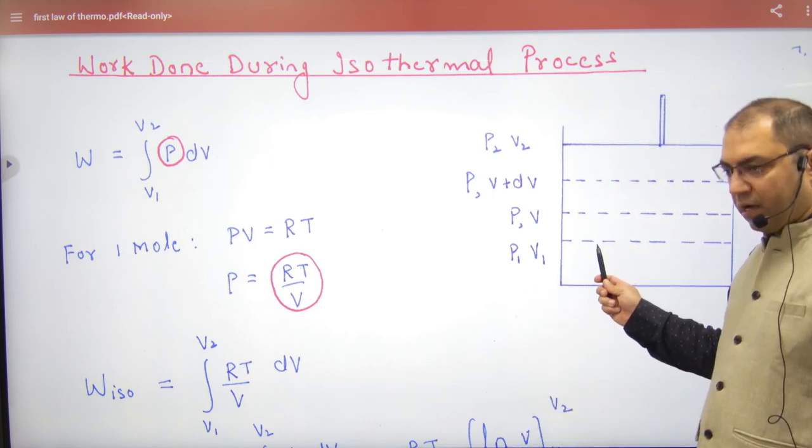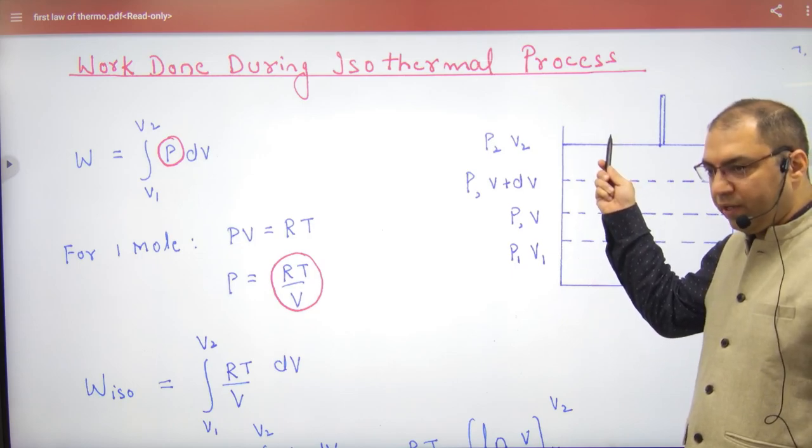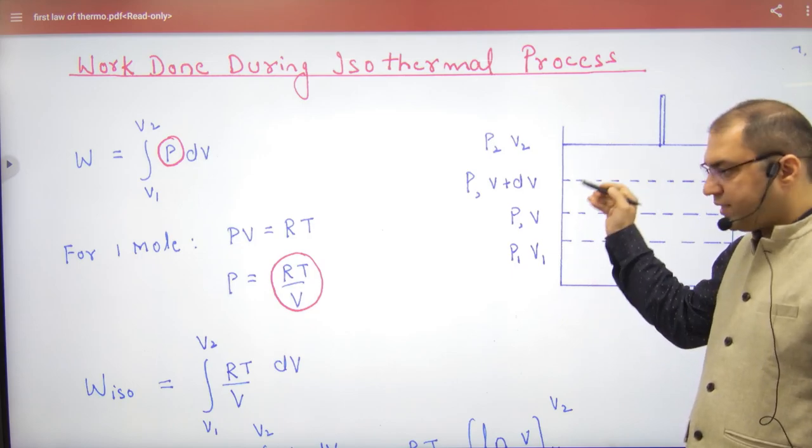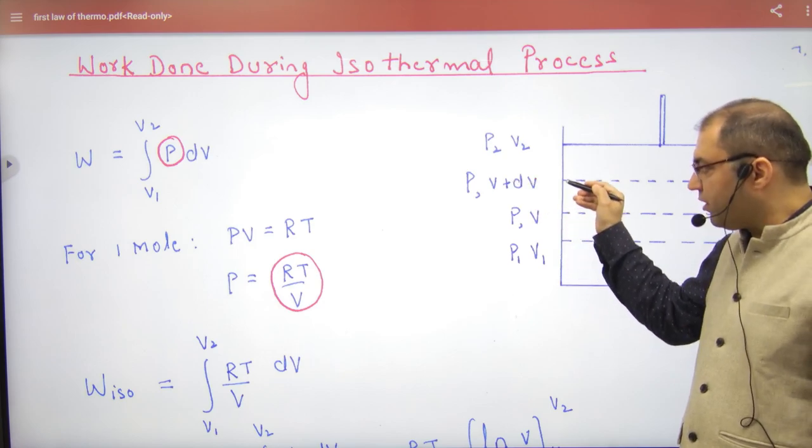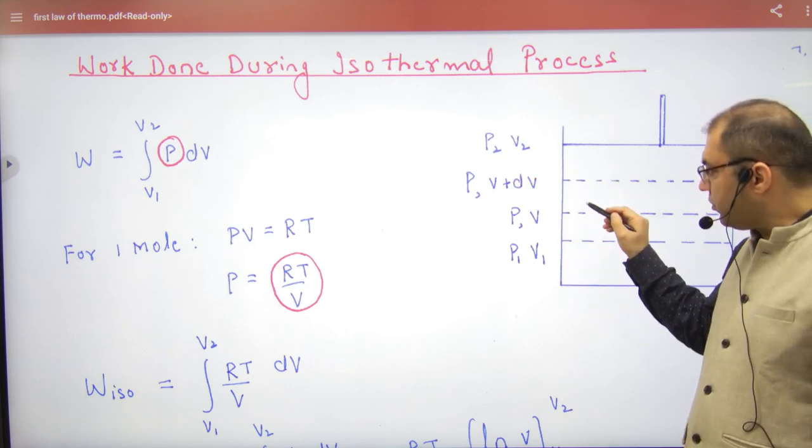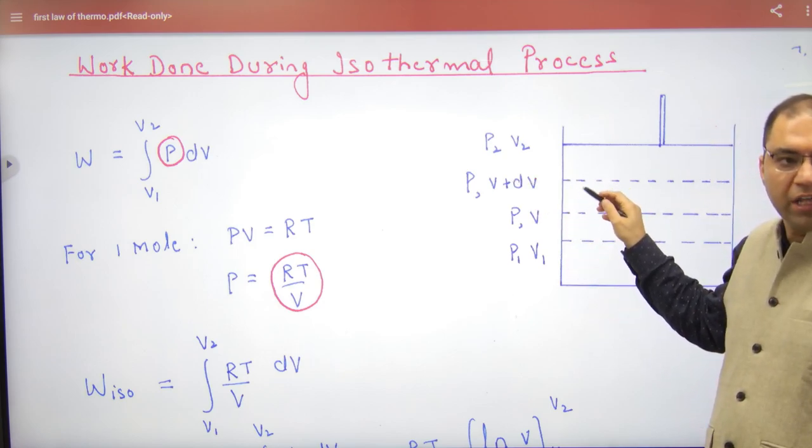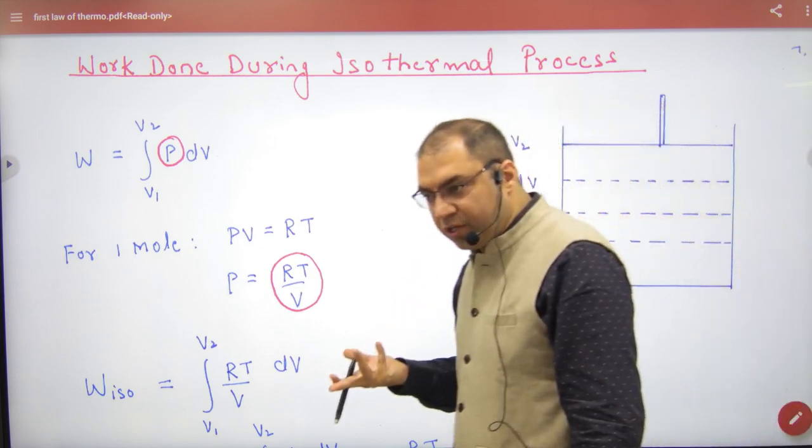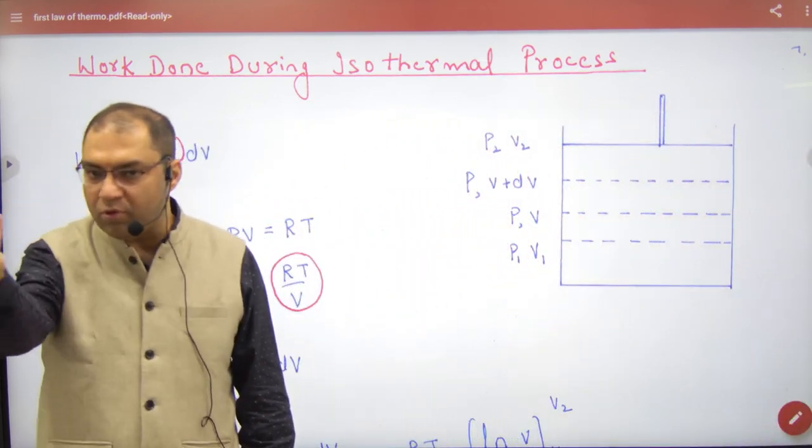So remember that your piston was here. P1, V1, P2, V2. Slowly going up so that the pressure is same. And the volume of small change is dV. So small change in work done or work done value. PdV integration from V1 to V2.